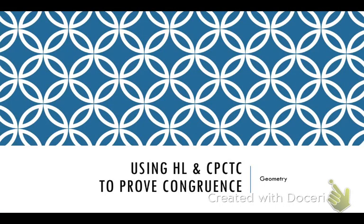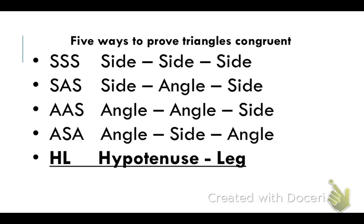We have learned four ways to prove that triangles are congruent. In this video, we're going to learn the last way — the fifth way — called hypotenuse leg. And then, once we're finished with that, we're going to talk about what we can say about corresponding parts once we know triangles are congruent.